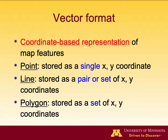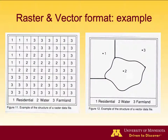The second format, vector format, is a coordinate-based representation of map features. There are three data types: points, lines, and polygons. A point is stored as a single XY coordinate, a line is stored as a set of XY coordinates, and a polygon is stored as a set of XY coordinates which enclose an area. The previous raster example can also be represented in vector format.